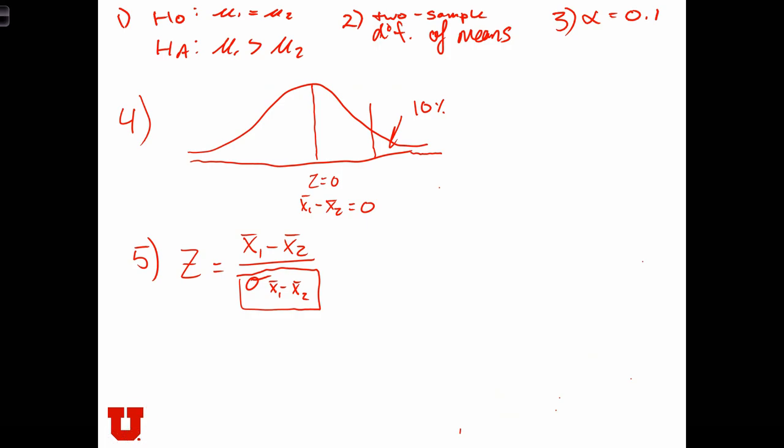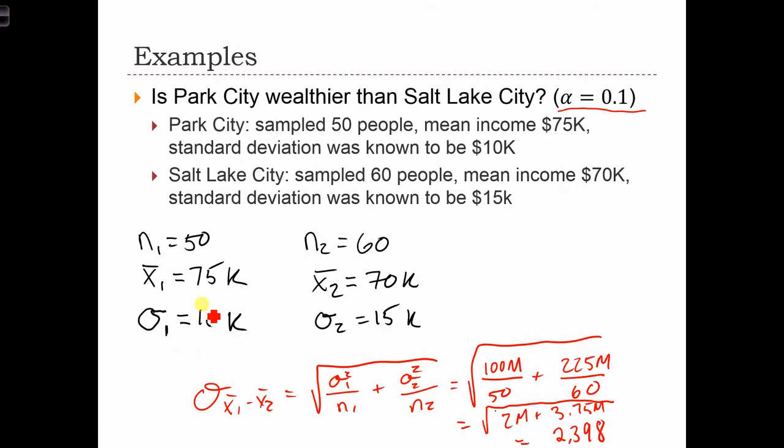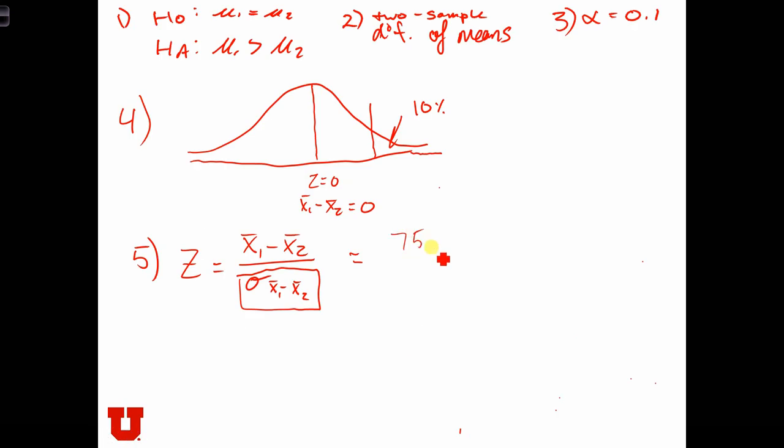Let's go back to formulating our z-score. This is equal to x̄1 minus x̄2. That was 75,000 minus 70,000, all over 2,398, which equals 5,000 divided by 2,398, which equals 2.08.